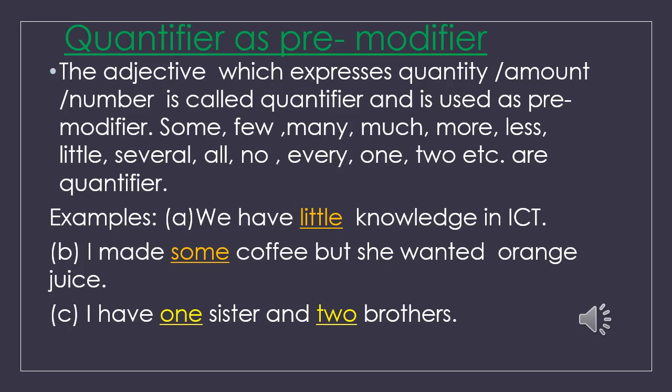Quantifier as premodifier. The adjective which expresses quantity, amount, or number is called a quantifier and it is used as premodifier. Some, few, many, more, most, less, little, several, all, no, every, one, two, etc. are quantifiers. Example A: 'We have little knowledge in ICT.' Example B: 'I made some coffee and she wanted orange juice.' Example C: 'I have one sister and two brothers.' Here, 'little,' 'some,' 'one,' and 'two' are quantifiers used as premodifiers of 'knowledge,' 'coffee,' 'sister,' and 'brother.'